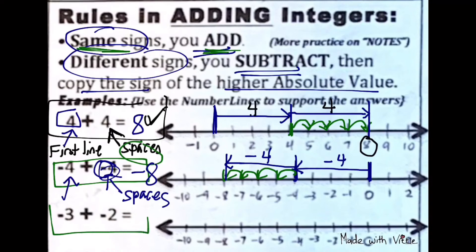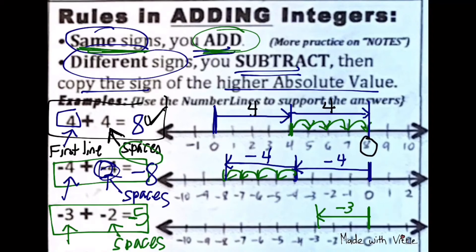It says negative 3 plus negative 2. Are they the same signs? Yes, so we add them — negative 3 plus negative 2 gives negative 5. On the number line, the first number is negative 3: start from 0, go to the left, stop on negative 3. Then we add 2 more spaces going to the left because it's a negative number. Count 1, 2 to the left. The next line stops on negative 5, because negative 3 plus negative 2 is negative 5.